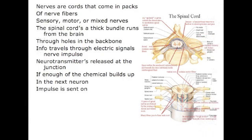Nerves are cords that come in packs of nerve fibers. Sensory, motor, and mixed nerves. The spinal cord is a thick bundle that extends from the brain through holes in the backbone. Information travels through an electrical signal called a nerve impulse. Neurotransmitters are released at the junction, and if enough of the chemical builds up, it triggers the next neuron.